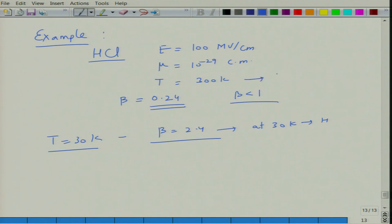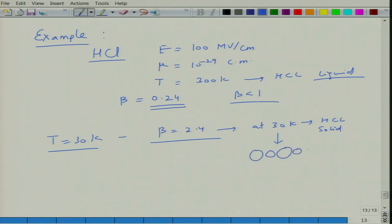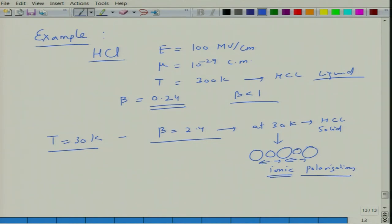At 30 K, HCl is in solid form. In the solid form the dipoles tend to cancel each other, so basically only ionic polarization contributes. As a result, dipolar polarizability is not valid at lower temperatures — it is only the ionic polarization that contributes for HCl in its solid form, similar to an NaCl structure.